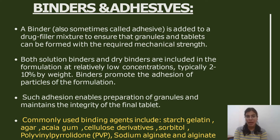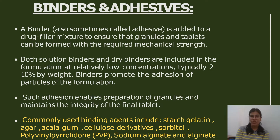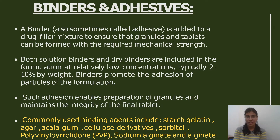Examples of binders and adhesives include starch, gelatin, agar, acacia gum, cellulose derivatives, sorbitol, polyvinylpyrrolidone, sodium alginate, and alginate derivatives.